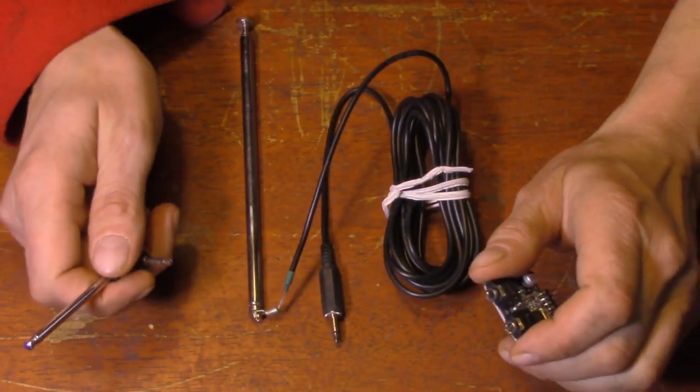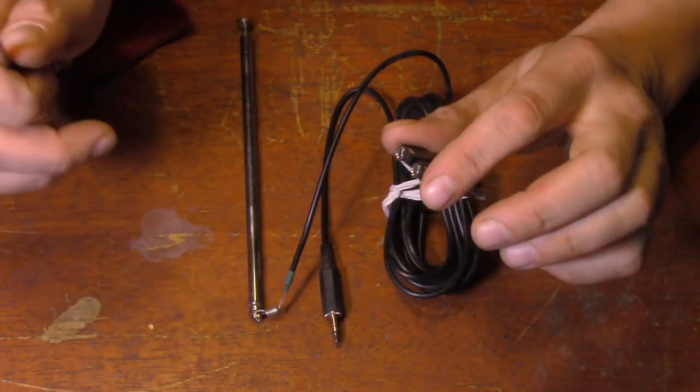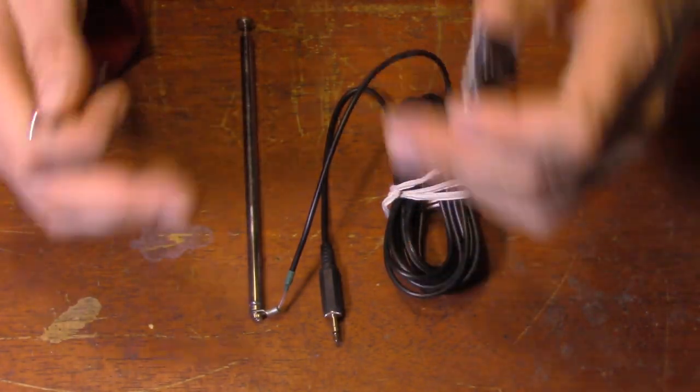So what we're going to do is make one using a shielded cable so that the cable we're using does not act as an antenna.